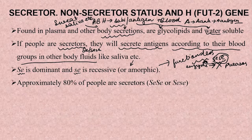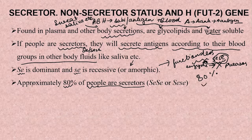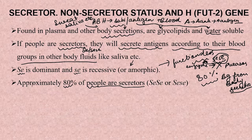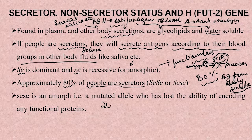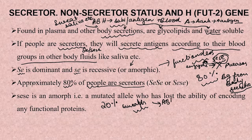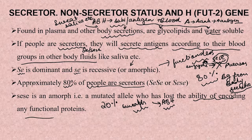Almost 80 percent of the population are secretors. In the case of 80 percent of people in any population, you will be able to detect the blood group from body secretions as well, in addition to grouping from blood. But in the case of 20 percent of the population, because of the presence of the amorphic pure recessive form, these ABH substances cannot be detected in bodily fluids. This condition is caused by the mutated allele which has lost the ability to encode any functional protein.